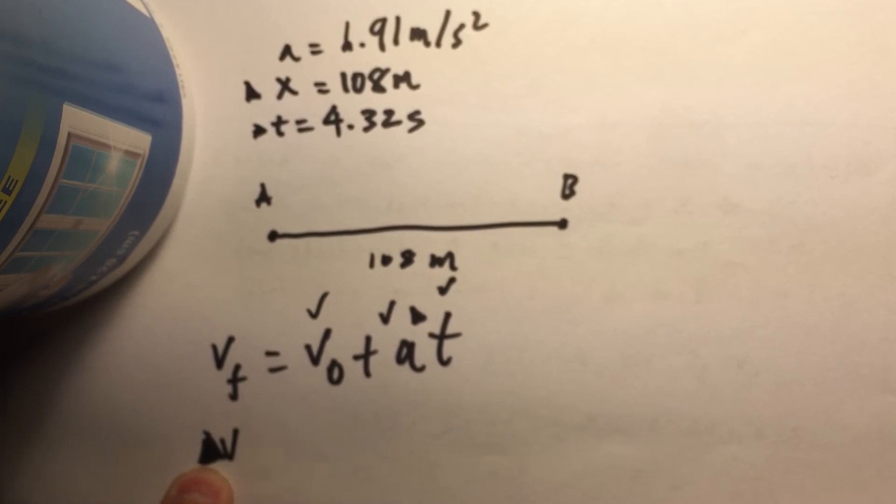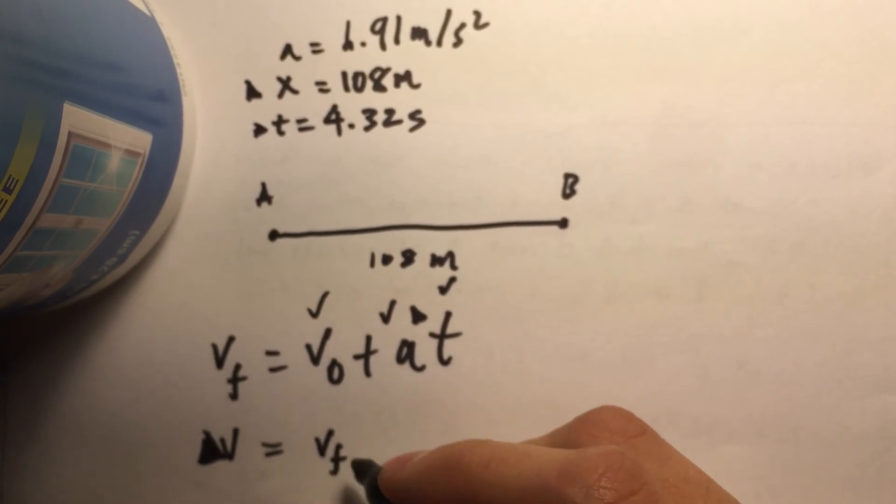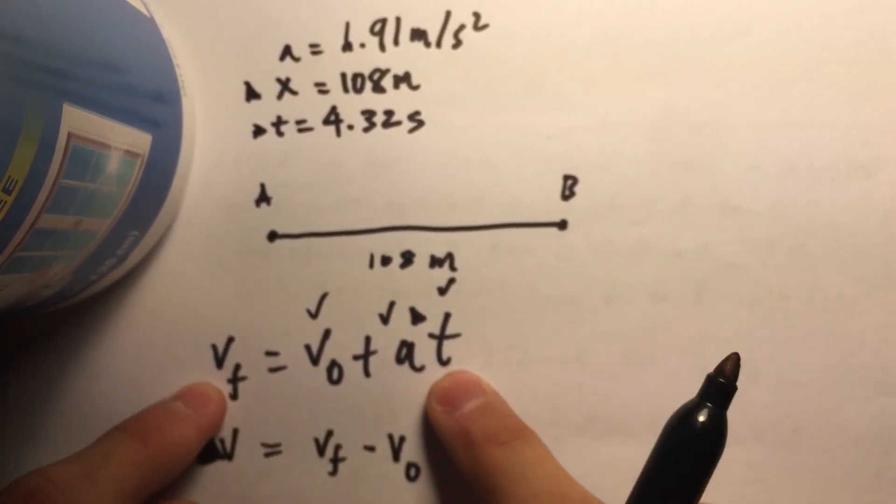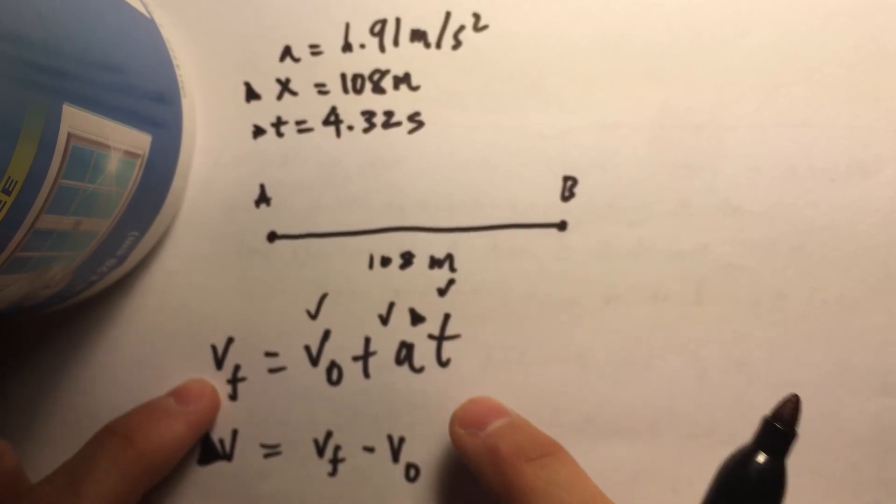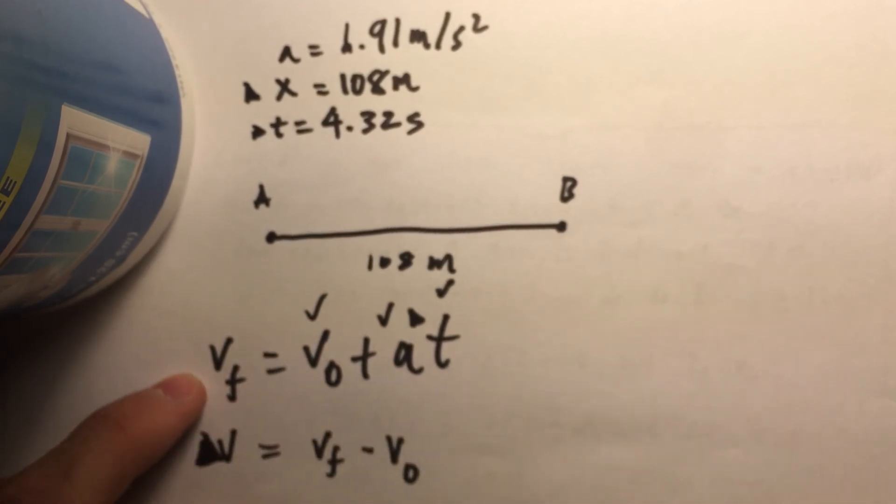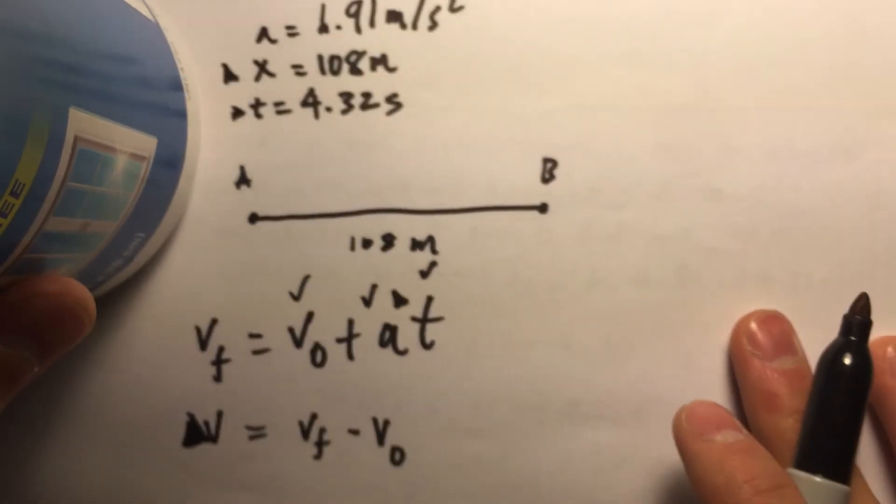If you recall, delta V, what exactly does delta V stand for? Well, delta V stands for change in velocity, which means velocity final minus velocity initial. If we look at this equation, it's so beautiful because all we have to do is bump this V naught to the other side and we have our expression.